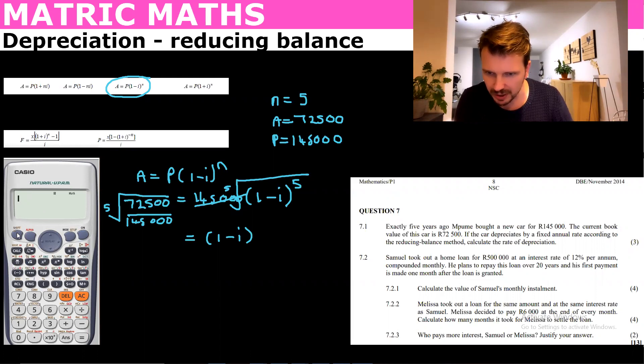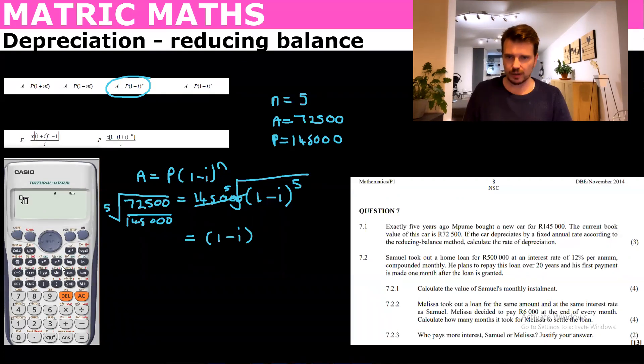We want the button which allows us to put in a value for the root. So we put 5 as the root, and then we've got $72,500 over $145,000 in brackets. Equals, and that's going to be 0.87.